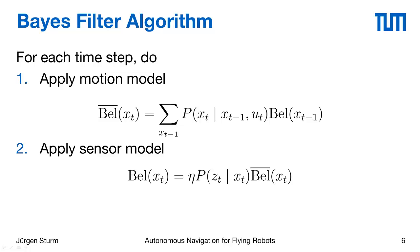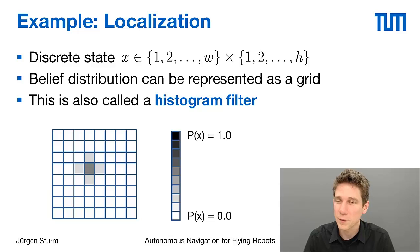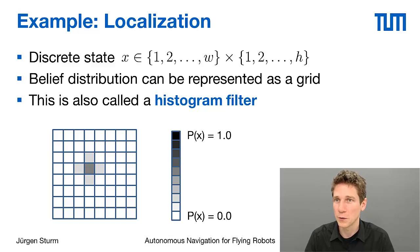Although we have two separate steps, the Bayes filter can also work if you have many more actions or if the steps are not in sync. You can run these two steps independently depending on how often you get motion or sensor updates. I thought it would be helpful to immediately give an intuitive example of how this looks, and I'll do that with the so-called histogram filter, or grid filter as it's also called.